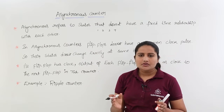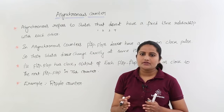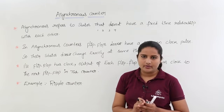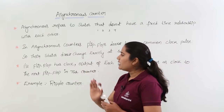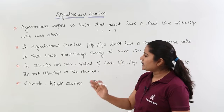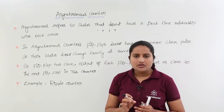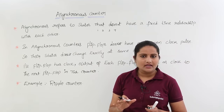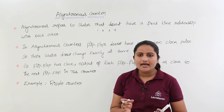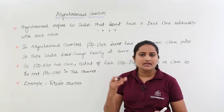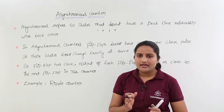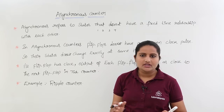Clock pulse means clock duration. So if the clock duration is going to change, the state is also going to vary — meaning state timing is also going to vary. In asynchronous counters, flip flops do not have a common clock pulse, so their states do not change at exactly the same time.